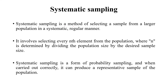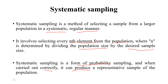Systematic sampling is a method of selecting a sample from a larger population in a systematic, regular manner. It involves selecting every nth element from the population, where n is determined by dividing the population size by the desired sample size, which is known as the sampling interval. Systematic sampling is a form of probability sampling, and when carried out correctly, it can produce a representative sample of the population.